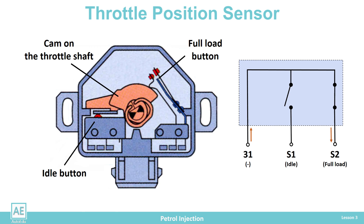When the gas pedal is pressed all the way, the throttle opens completely and the cam activates the other button. The control unit receives a signal from the second button while the first one is open, and has the information that the engine is currently in a full load state.